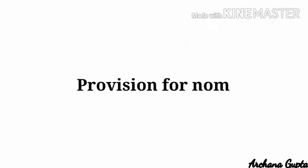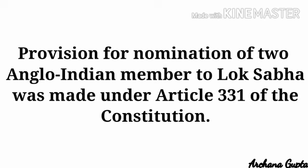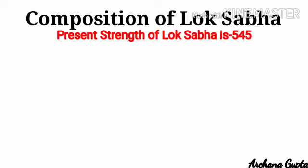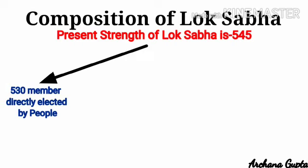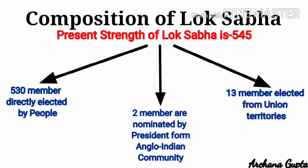The provision for nomination of two Anglo-Indians to the Lok Sabha was made under Article 331 of the Constitution — an article important to remember for examinations. Though the maximum strength is 552, there are currently 545 members in the Lok Sabha, of which 530 are directly elected by the states, 13 by Union territories, and 2 are nominated by the President.